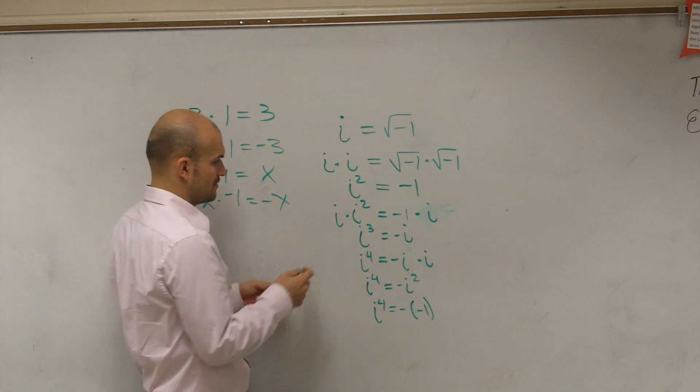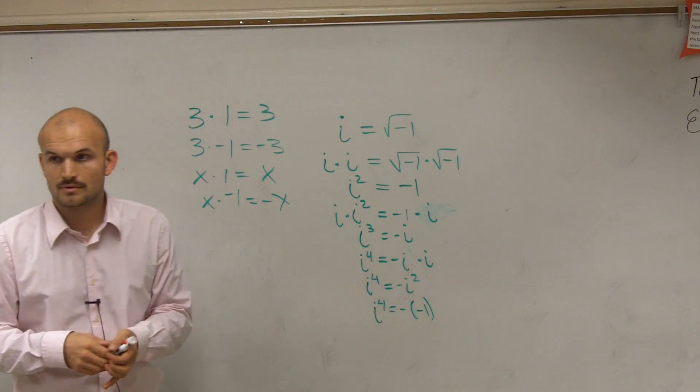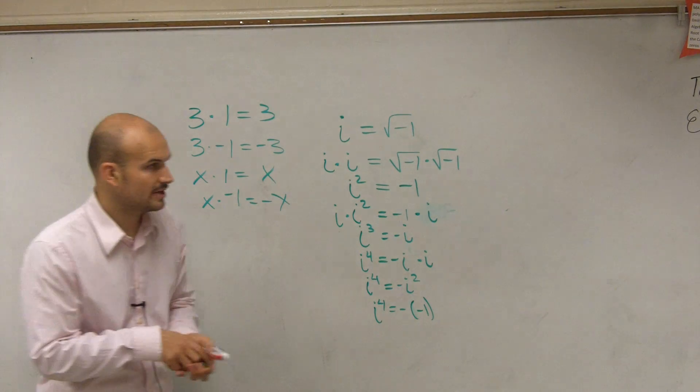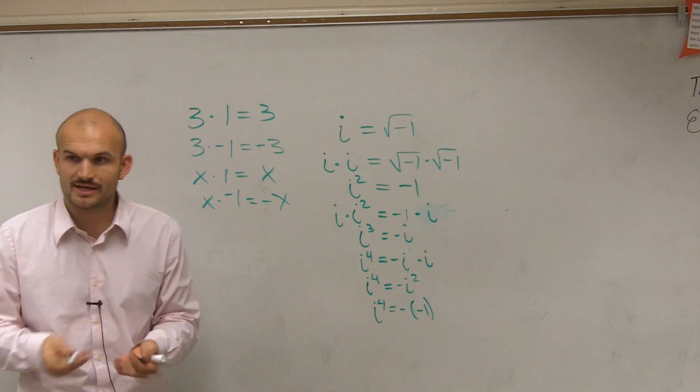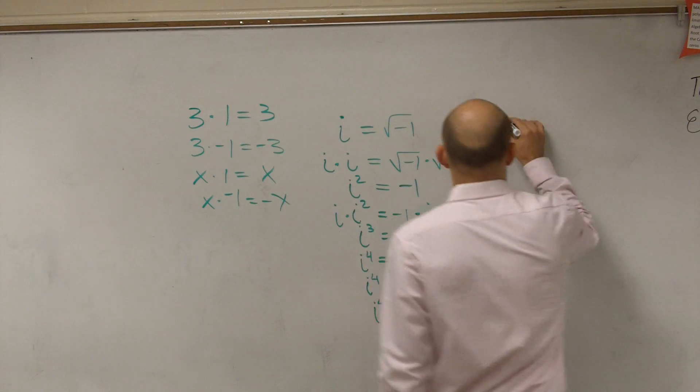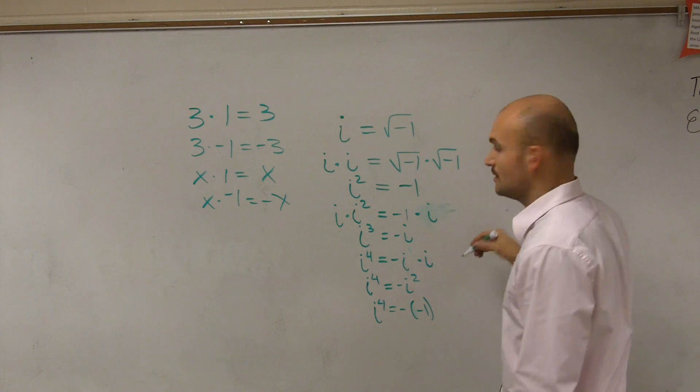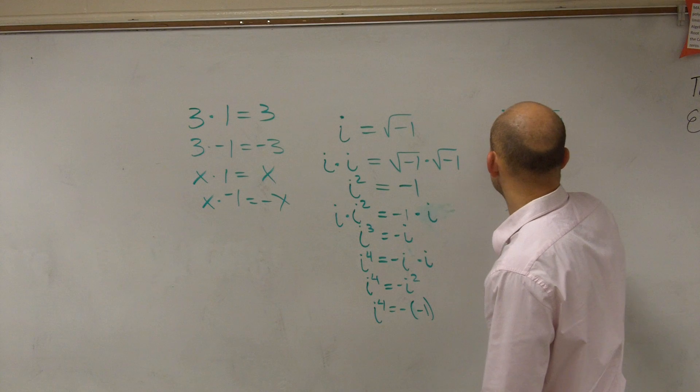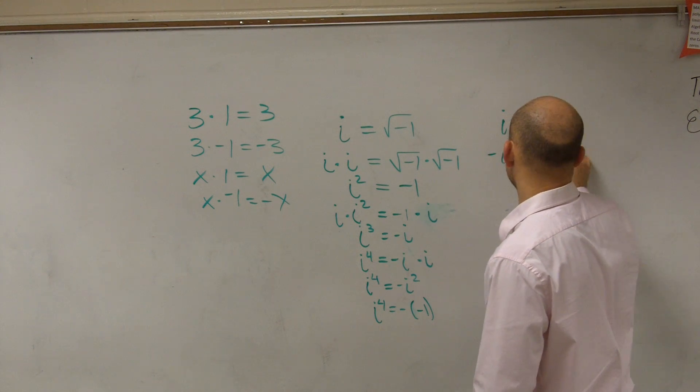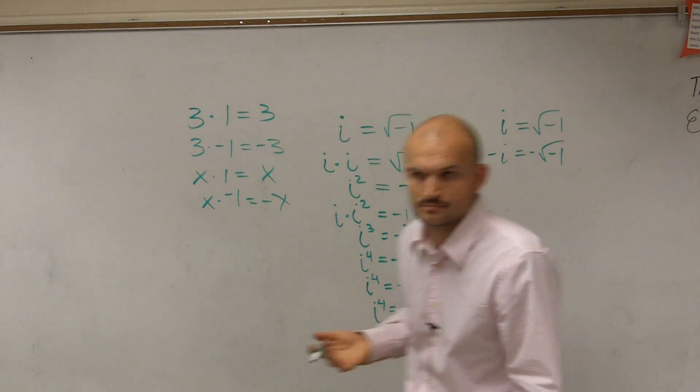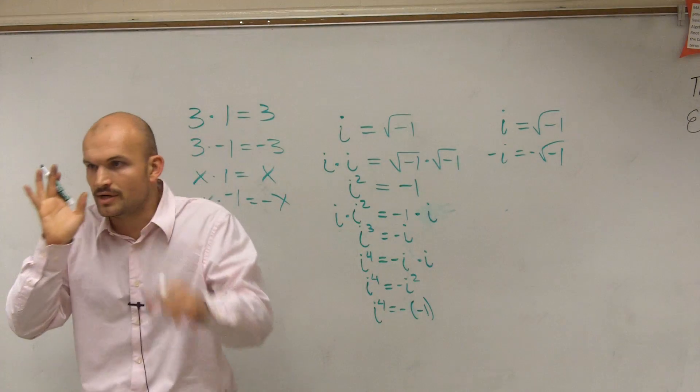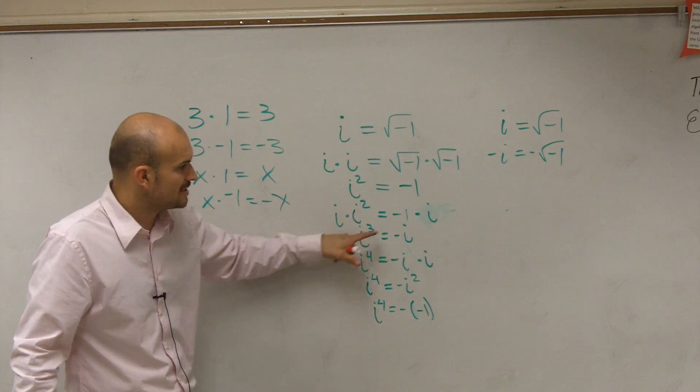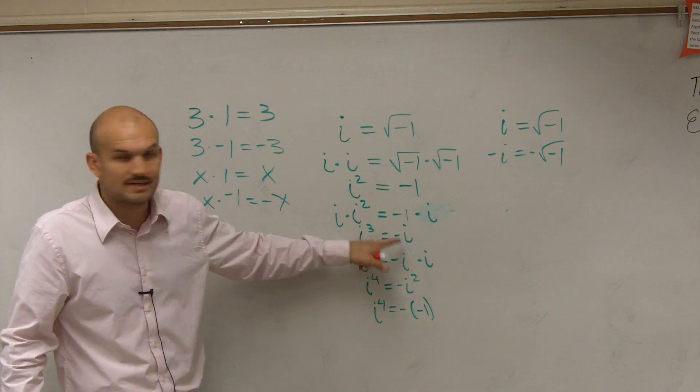So then what I did to get... Well, we can think about it. If you guys want to get a value, if you said i is equal to the square root of negative 1, then we say what's negative i. That means you just multiply by negative 1 on both sides. Therefore, negative i equals negative square root of negative 1. If you wanted to look at it as a real number. But I'm not concerned about that. All I want you guys to be concerned about is i cubed equals negative i.